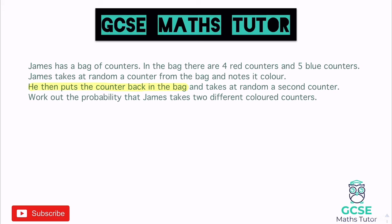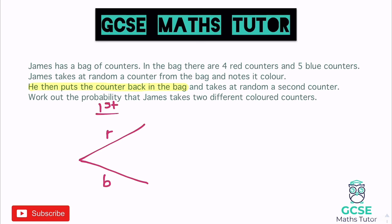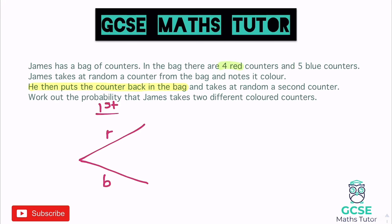We're going to construct this via a tree. We draw two branches representing red and blue — that's the first pick of the counters. We've got four red and five blue, so nine counters in total. The probability of getting red is 4/9 and the probability of getting blue is 5/9. I'll write them as fractions — it's probably easier for this question.